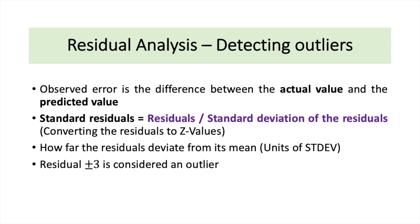What is the purpose of a residual analysis? The purpose is to detect outliers. When we talk about residuals, they are the observed errors, which is the difference between actual values and the predicted values. From these residuals, we are going to calculate the standard residuals. The formula is the residuals divided by standard deviation of the residuals — we are converting the residuals to Z values. From the standard residuals, we will get to know how far the residuals deviate from their mean in the units of standard deviation.